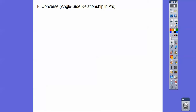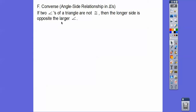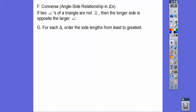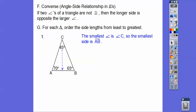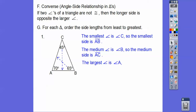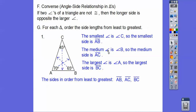The converse is the angle-side relationship: if two angles are not congruent, then the larger side is opposite the larger angle. So for each triangle, order the side lengths from least to greatest. Here we have angles of 45, 65, and 70 degrees — which should add up to 180. The smallest angle gives side AB as the smallest; the medium angle of 65 degrees gives side AC as the medium side; and 70 degrees is the biggest angle, so side BC is the biggest side. So: AB is less than AC is less than BC.